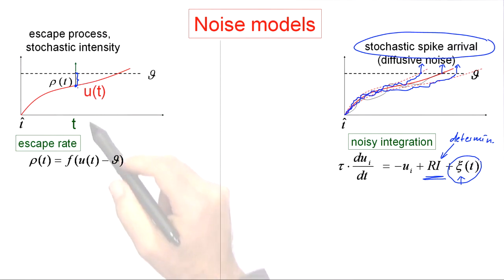This is the stochastic intensity, the instantaneous rate of firing a spike. Spikes are formal events—they are points in time. So overall, this is the stochastic intensity of a point process.